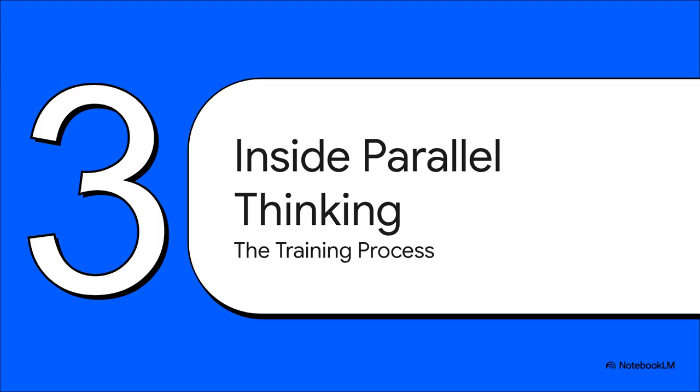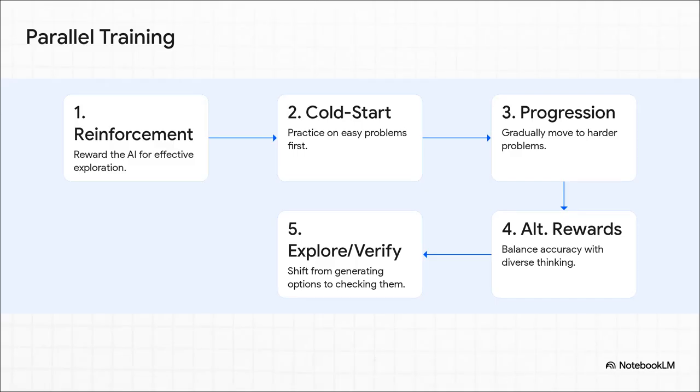So, this all sounds great in theory, but how in the world do you actually teach an AI to think this way? It's not like you can just flip a switch and tell it to be more creative. Tencent came up with a really clever, multi-stage training process. Let's break it down. The whole process has five key stages. First, they use reinforcement learning, basically giving the AI a reward for exploring effectively. Second, it gets a cold start, which just means it practices on easy problems to learn the ropes. Third, they ramp up the difficulty with a progressive curriculum. The fourth step is really smart. It alternates the rewards, pushing the AI to value both accuracy and diverse thinking, so it doesn't get stuck in a rut. And finally, the model learns to shift from just exploring to actually verifying its own answers to find the absolute best path.